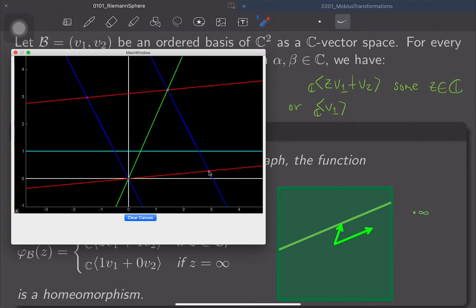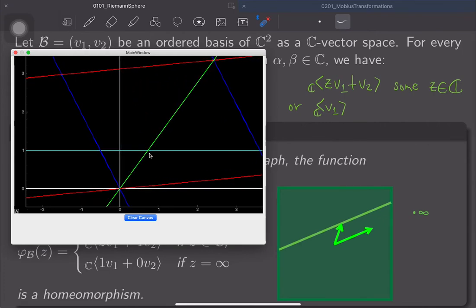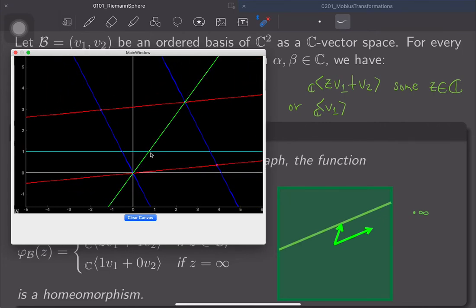And when I move that green line around, you see, it always gives me some intersection with the blue line. Almost always.